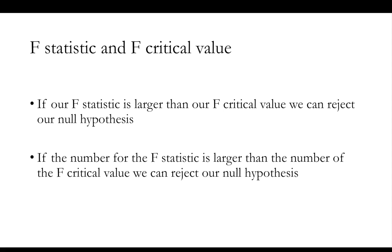If our F statistic, produced by the ANOVA, is larger than the F critical value — which is also produced by the ANOVA — we can reject our null hypotheses. So if the number for the F statistic is larger than the number of the F critical value, we reject. And the opposite is true: if the F statistic is smaller than the F critical value, then we fail to reject our null hypotheses.